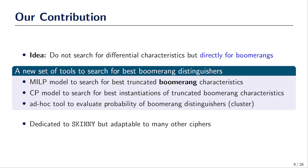Then, we use a CP model — a constraint programming model — to search for the best instantiations of truncated Boomerang characteristics. So if we combine the first and the second step, we obtain a process to search for the best Boomerang characteristics. And then, we have a third step in which we will precisely compute the probability of a Boomerang distinguisher by computing a cluster of Boomerang characteristics. This work is dedicated to the block cipher SKINNY, but it is highly adaptable to many other ciphers.